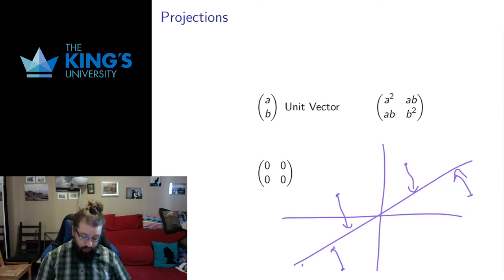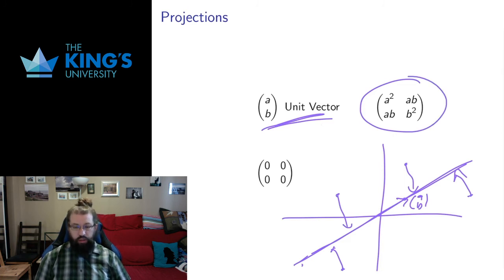We can describe it the same way we described reflections. If I have a unit vector a, b, that unit vector defines a line in some direction. If a, b is a unit vector, the projection onto that line is given by the matrix with these coordinates.